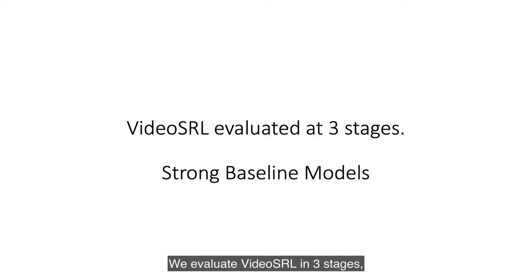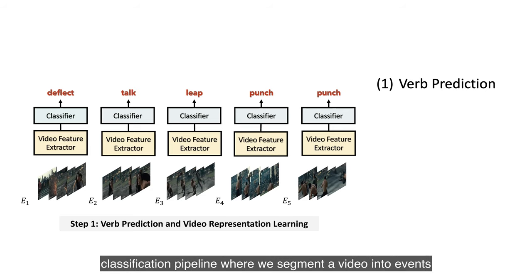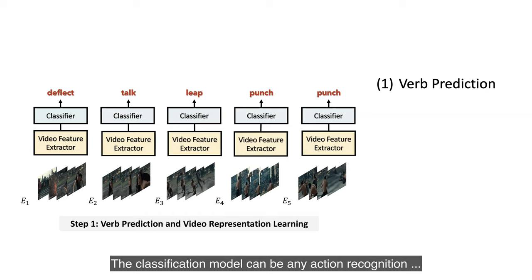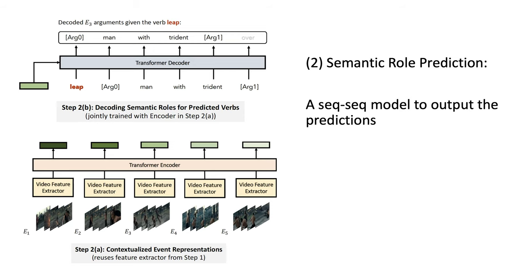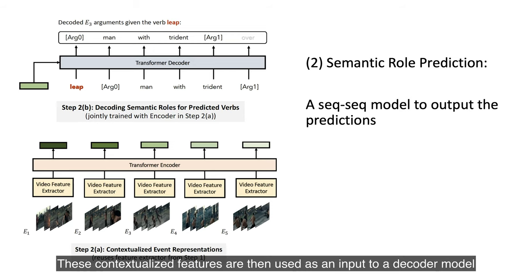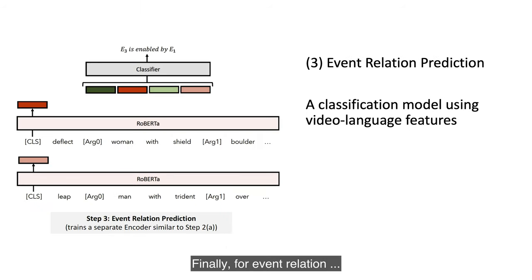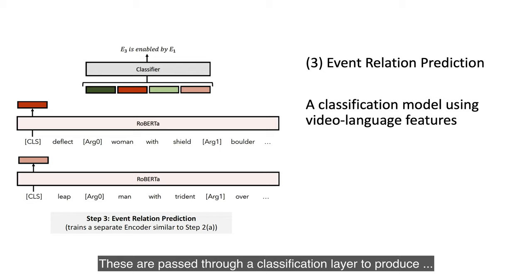We evaluate Video SRL in 3 stages and present strong baseline models for each. For verb prediction, we use the usual video classification pipeline where we segment a video into events and classify them individually; the classification model can be any action recognition model such as I3D or SlowFast. For semantic role prediction, we contextualize features from the action recognition model across the entire video using a transformer encoder, whose contextualized features are fed to a decoder that generates the required sequence of argument joint tokens. The resulting sequence can be post-processed to obtain phrases for each argument. For event relation classification, we use a text encoder to encode the verbs and arguments alongside contextualized features from the action recognition model, passed through a classification layer to produce the event relations.